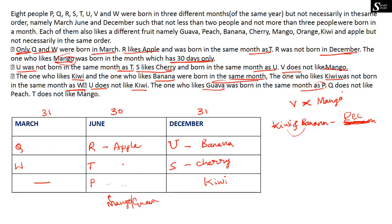The next clue says Q does not like peach. At this stage, mango and guava are placed in June, kiwi, banana and cherry are in December. The remaining unassigned fruits for March are peach and one other. Since Q doesn't like peach, W must like peach.